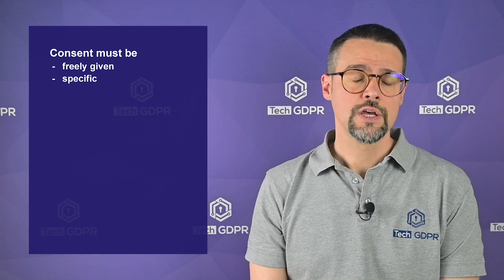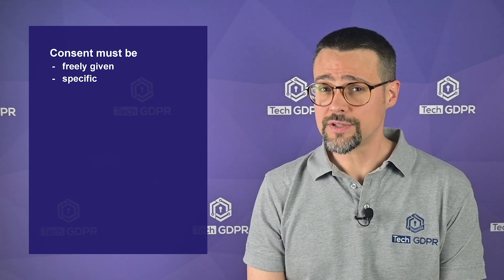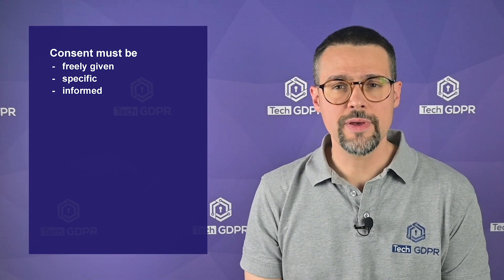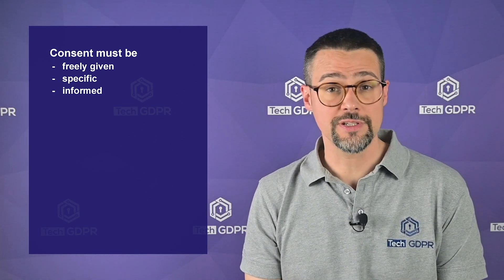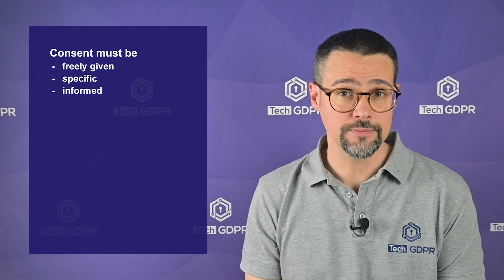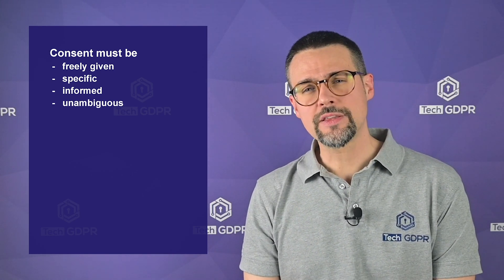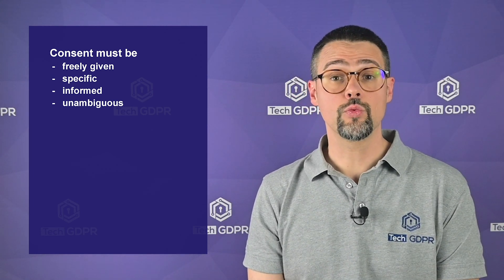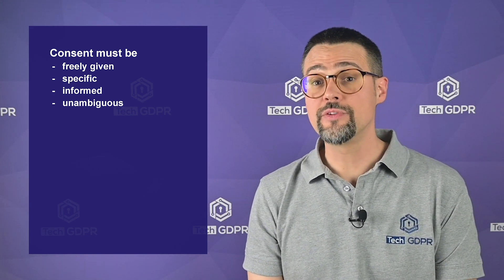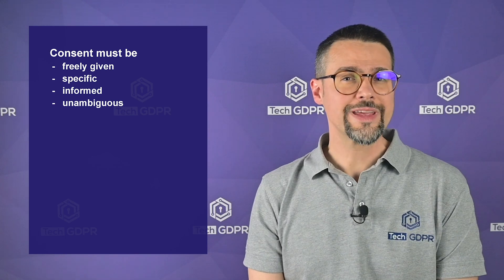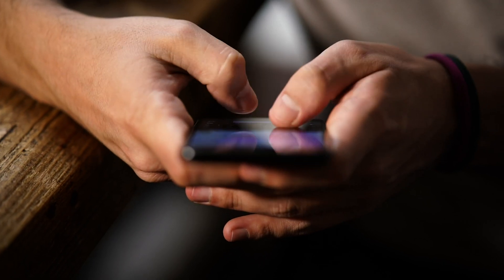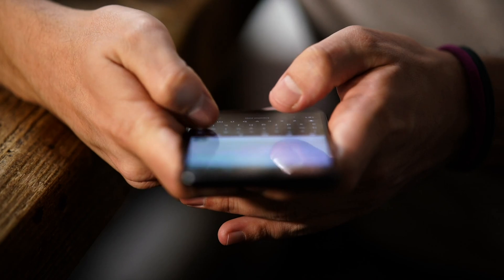Consent must also be specific — meaning the user cannot consent to many purposes under the same consent mechanism or tick box, so requesting consent for many purposes under one button is illegal. It must be informed — meaning the user must have simple information given to them in order to make a decision, so a mere link to the privacy or cookie notice is likely illegal. And it must be unambiguous — meaning the user must give a clear indication of their wish to accept cookies, so pre-ticked boxes or the setting of cookies before the user makes a choice is illegal.